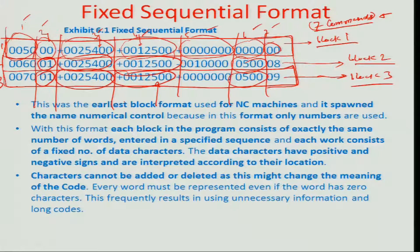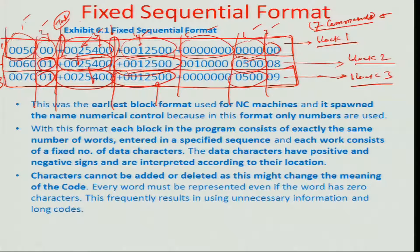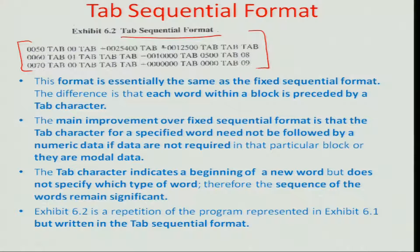It is very convenient for an operator if there is a tab button — very common on all computers. By using that tab button, if I fix a particular value to 0025400, all I need to do in the second and third lines is press tab twice, so that value is automatically taken from the last column and row address. You do not specifically write 0025400 again — just press tab and the value is automatically repeated. This change in technology led to the development of the tab sequential format.